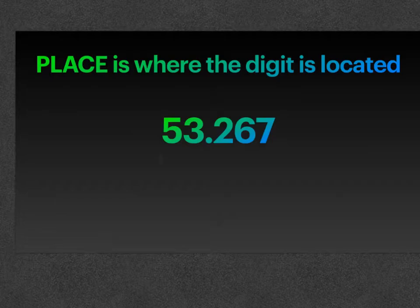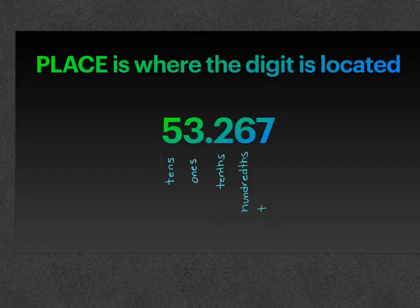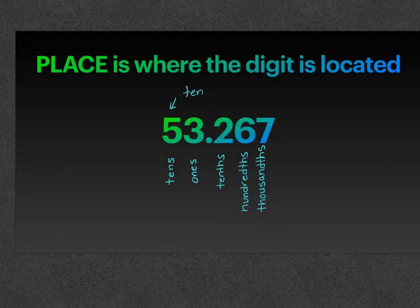We have the tens place, we have the ones place, and then on the other side of the decimal we have the tenths, the hundredths, and the thousandths. So if you are looking to identify the place of the five in this number, the place would be the tens place. If you are looking for the place of the seven, the seven would be the thousandths place.